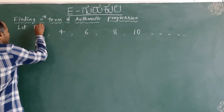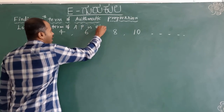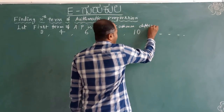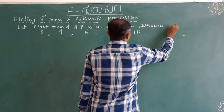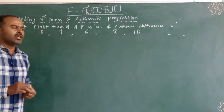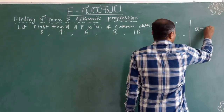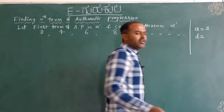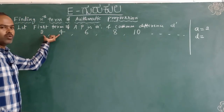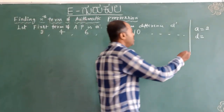Let us assume the first term of the arithmetic progression is A and the common difference is D. In this particular example, the first term is 2, and the common difference is the difference between any two consecutive terms. The difference between the first two terms: 4 minus 2 equals 2. The difference between the second and third terms: 6 minus 4 equals 2. Therefore, the common difference is 2.